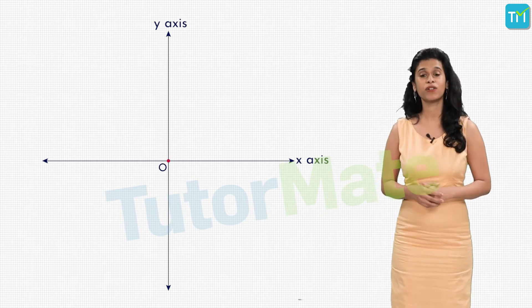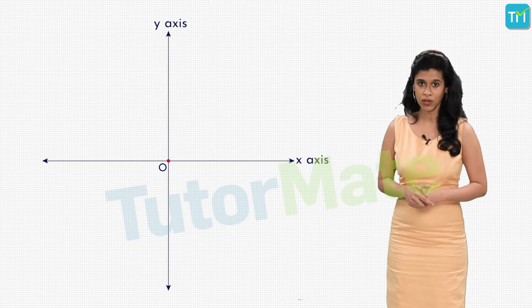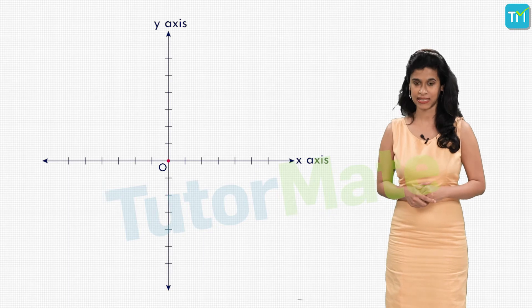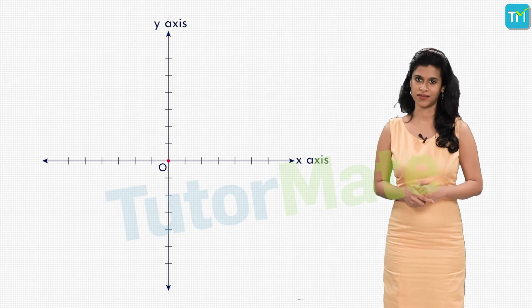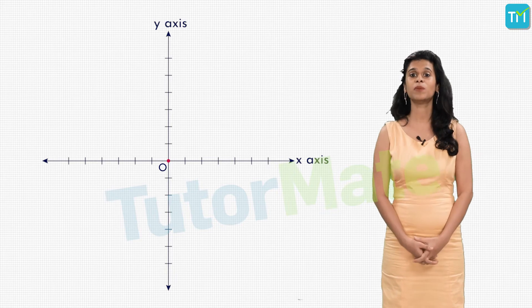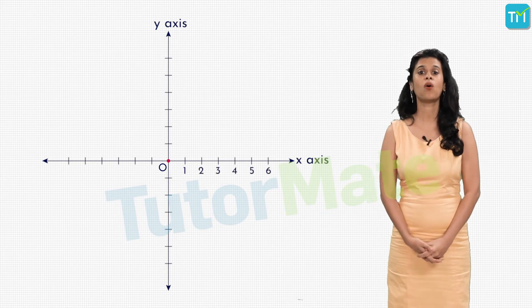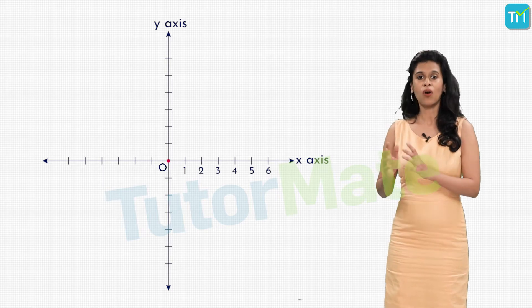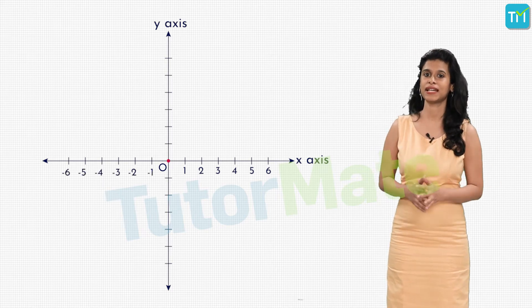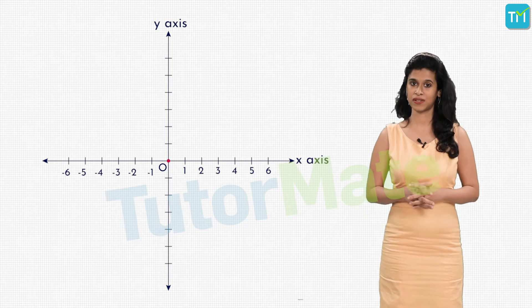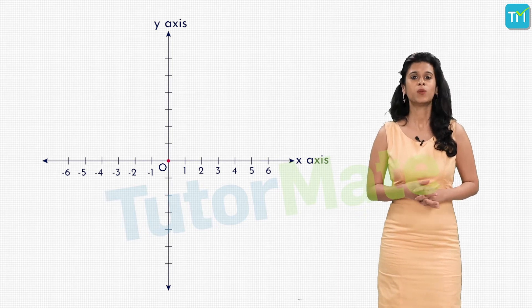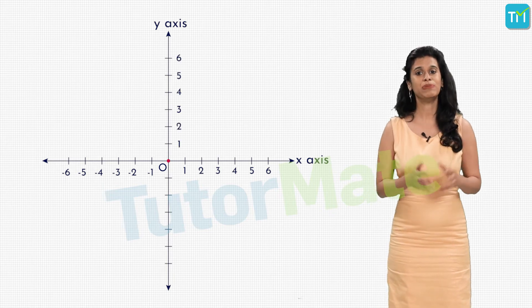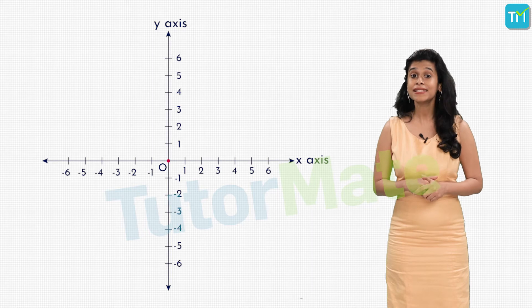Next, considering O as the origin having zero value, we represent numbers on the lines at equal distances similar to a number line. We first number the x-axis by taking all the numbers on the right hand side of O as positive numbers and all the numbers on the left hand side of O as negative numbers. For the y-axis, we have the numbers above x-axis taken as positive and the ones below x-axis taken as negative.